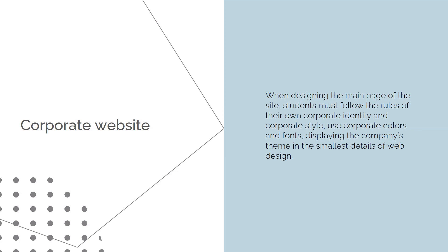The task is to create the main pages of a corporate website. When designing the main page, students must follow the rules of their corporate identity and style, use corporate colors and fonts, and display the company's theme in the smallest details of web design. The next task is to develop banners for advertising on the internet — students form three different promotional offers to promote the company on web pages and social networks. Students are also encouraged to use available website builders and online editors to create interface prototypes.